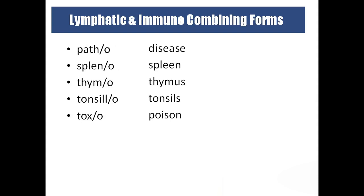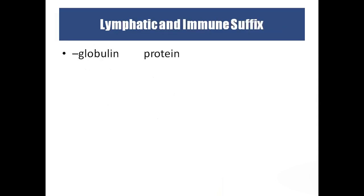Patho means disease, so pathology is the study of disease. Spleeno is spleen — remember the spleen is the graveyard of RBC; the RBC finally dies in the spleen. Thymo refers to thymus. Tonsillo refers to the tonsil, a lymphoid organ in the neck region. Tonsils can get inflamed — tonsillitis. If tonsillitis is recurrent, tonsils are removed, which is called tonsillectomy, though nowadays many are cured with corticosteroid injections. Toxo means poison. The suffix globulin means protein; immunoglobulins are proteins that fight against infections.